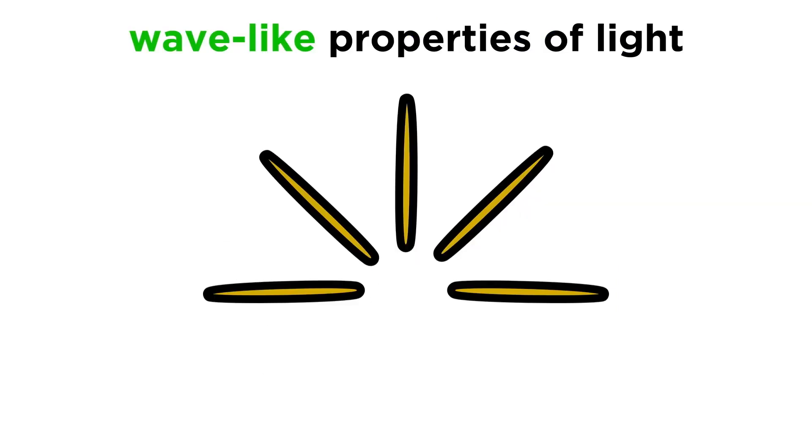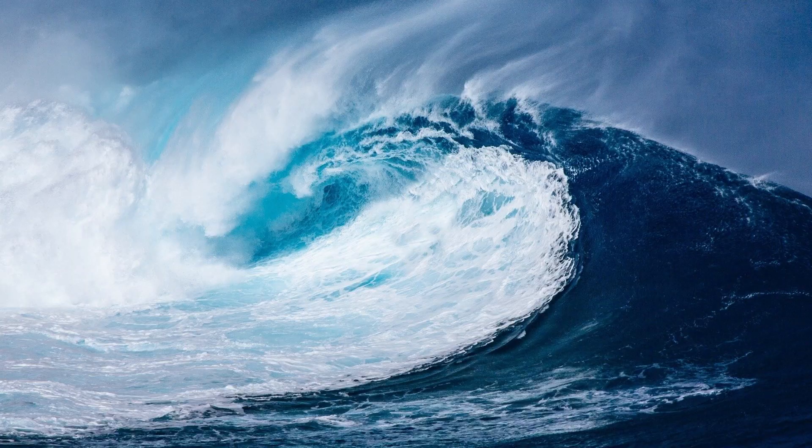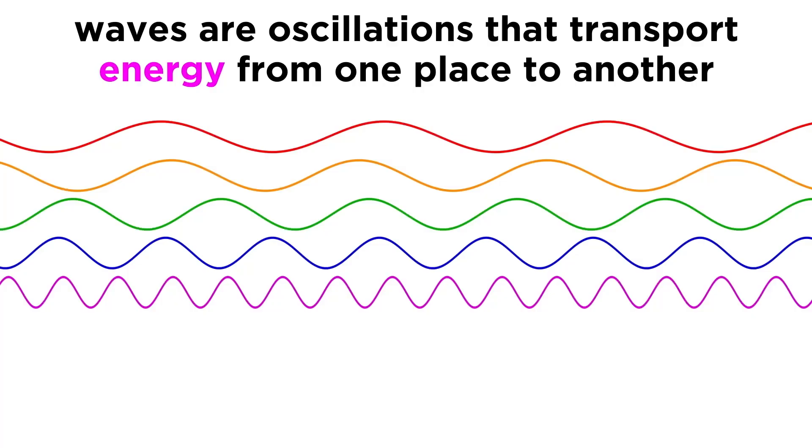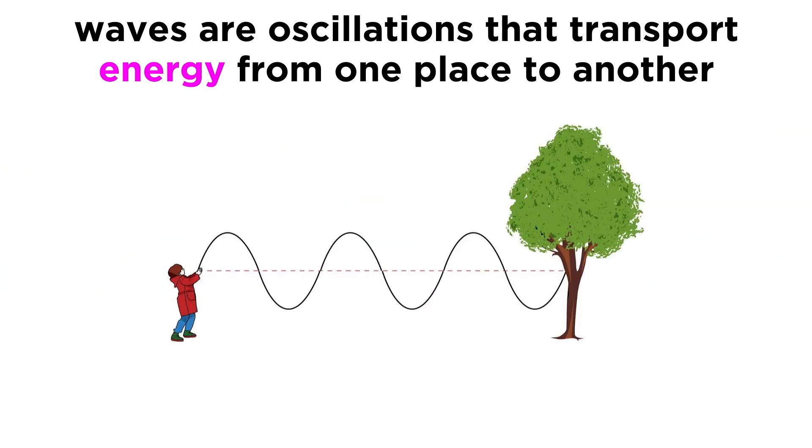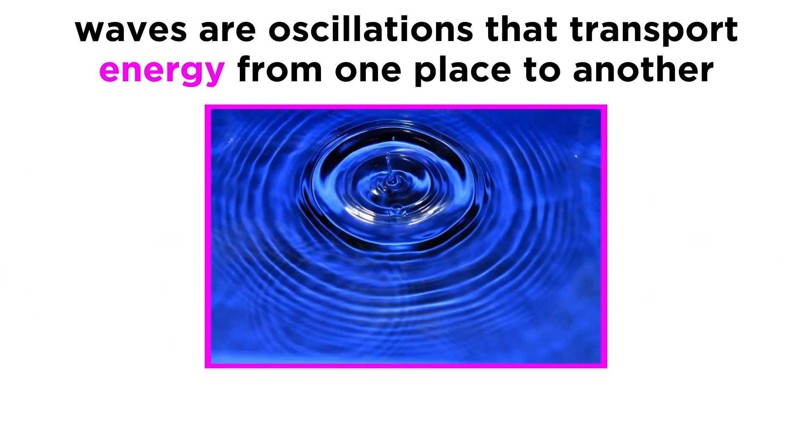So we need to know a little bit about the wave-like properties of light. What is a wave, anyway? Well, there are the waves in the ocean, and there are waves of light. Whatever kind of wave we are describing, it is an oscillation or periodic movement that transports energy from one place to another. Just shake the end of a rope or drop a rock into a pond to see the behavior of waves.